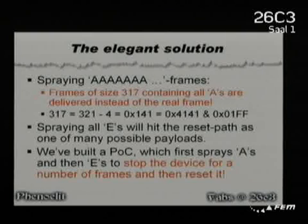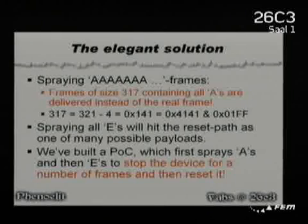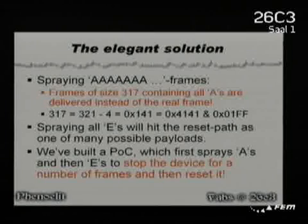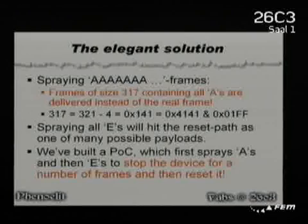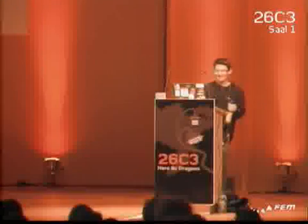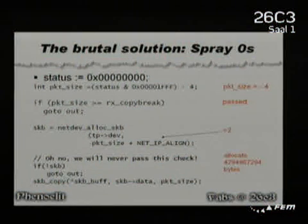If you spray with A's, something nice happens: you get a complete frame of A's of size 317 handed upwards. 317 is 321 minus 4 for the checksum, and that is in hex 0x141 — originally 0x4141, which is A's. So that's our payload. When you spray with E's, you hit the reset path. And when you spray with A's first and then E's, you actually get to drop N frames — some amount of frames you want to drop — and then the adapter goes back to normal. That was the elegant case of making sure the DNS query would never reach the DNS server.